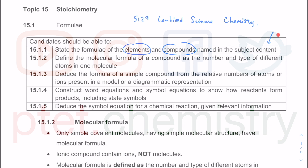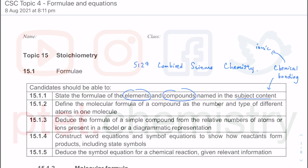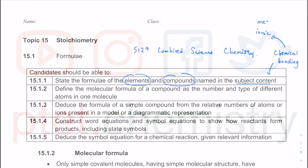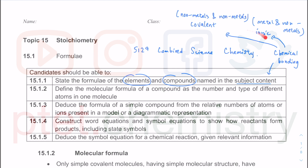The subject content here refers to the previous topic I covered with you — that was on chemical bonding. We spent a couple of weeks on chemical bonding which included ionic as well as covalent bonding. Ionic bonding is between metals and non-metals, while covalent bonding is the sharing of electrons between non-metals and non-metals. All those things from the previous topic link very well to this new topic, which is why Cambridge says candidates should be able to state the formula of elements and compounds in the subject content.